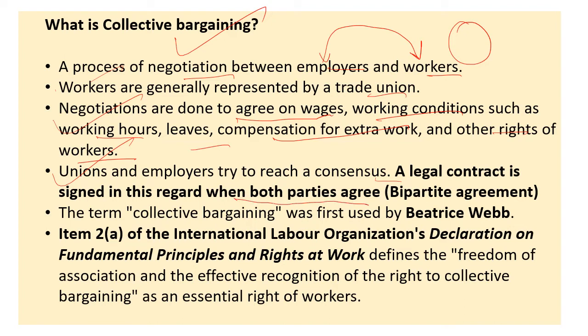A legal contract is signed when both parties agree, which is called a bipartite agreement — when only two parties, the employer and employees, are involved. If a third party is also involved — such as an arbitrator, government, or a court — then it is called a tripartite agreement.